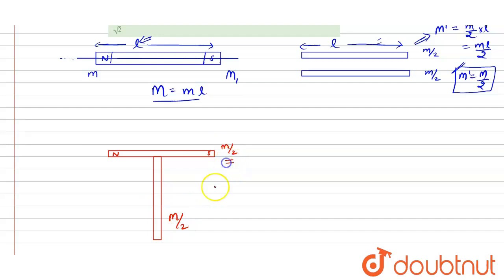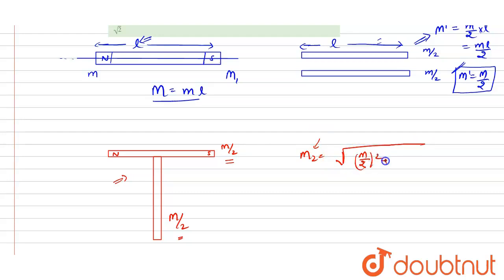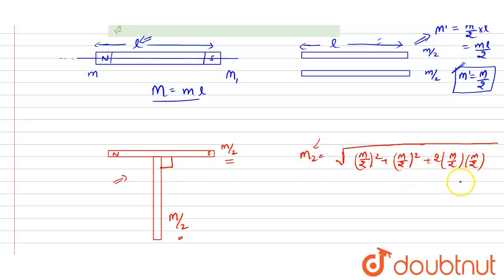Now we know that the magnetic moments are vector quantities. So the net magnetic moment for this system, which is given as M2 in the question, will be equal to √[(M/2)² + (M/2)² + 2·(M/2)·(M/2)·cos θ], where θ is 90 degrees since both the magnets are perpendicular to each other. Now we know that the value of cos 90° is 0, so this term will be 0.